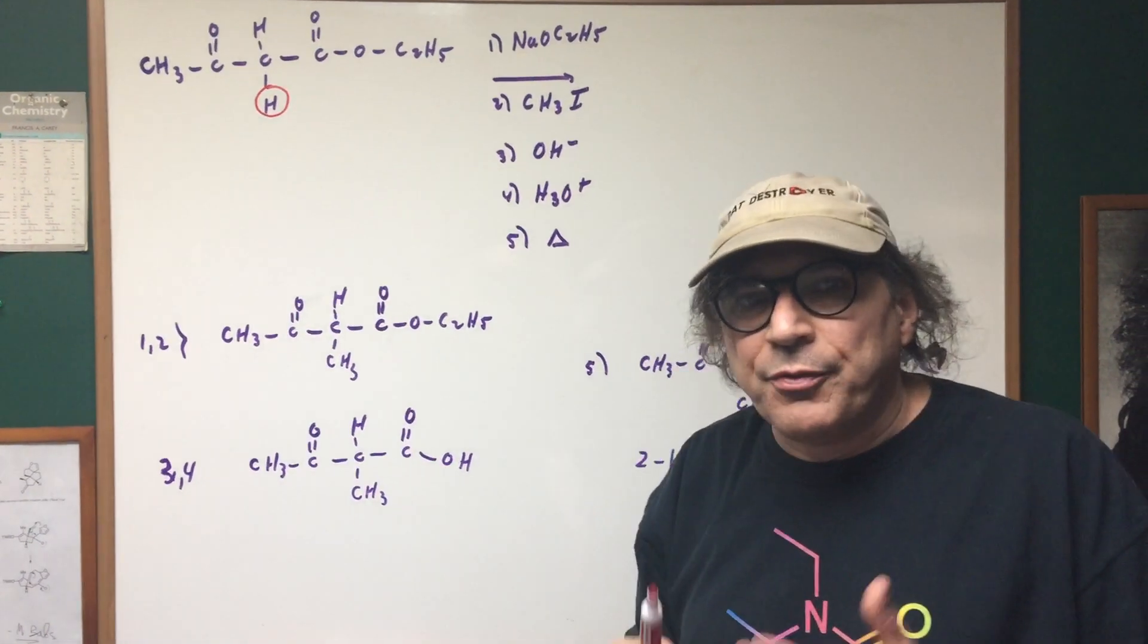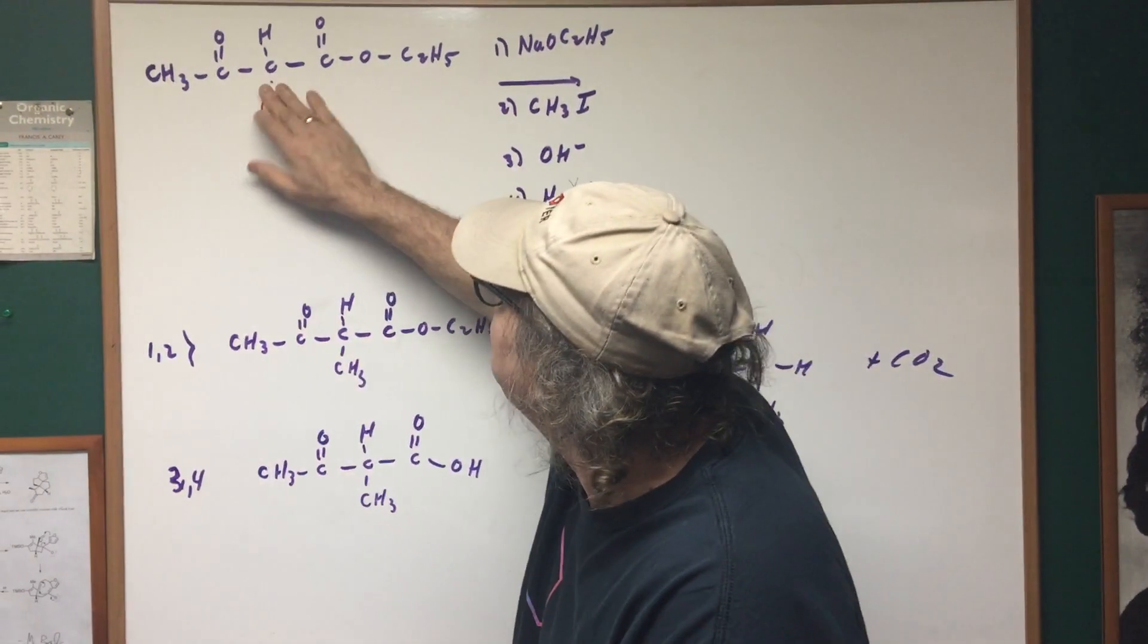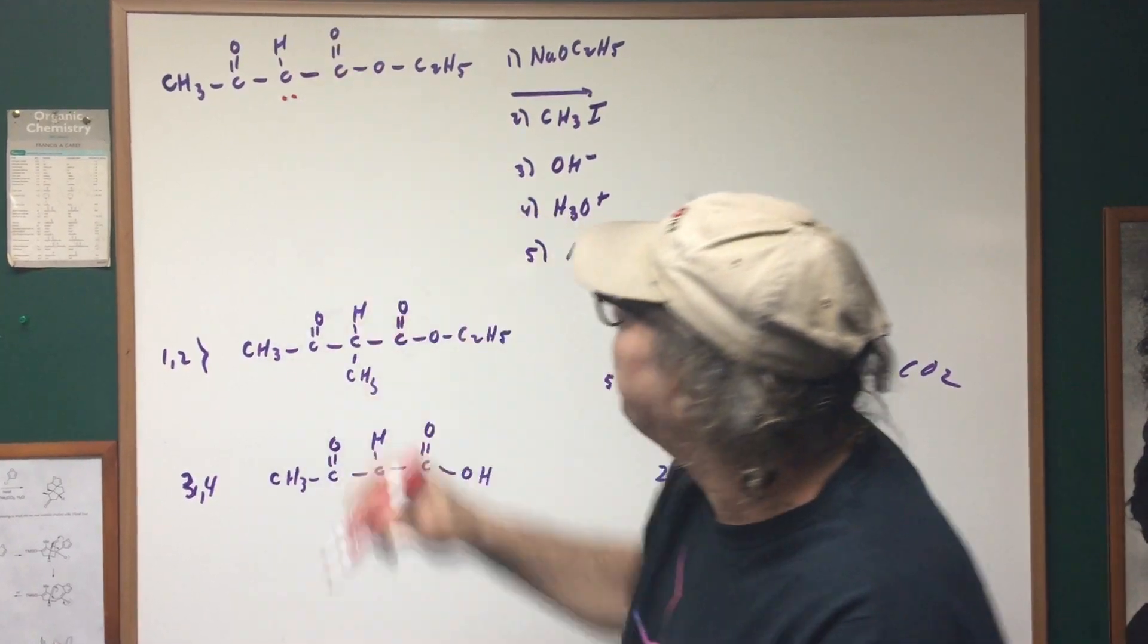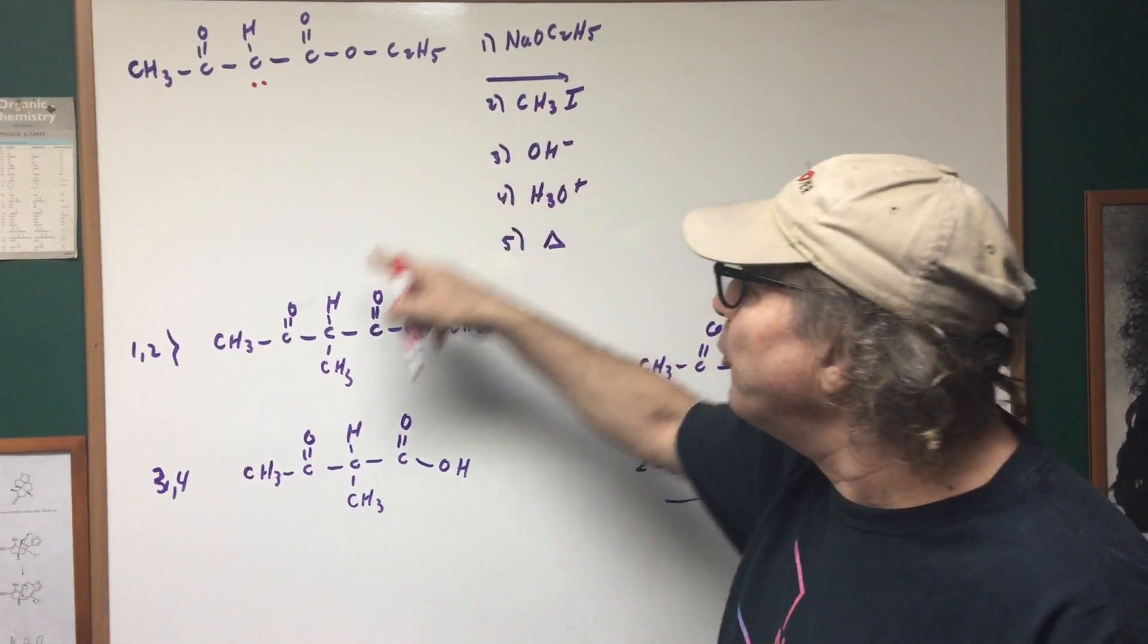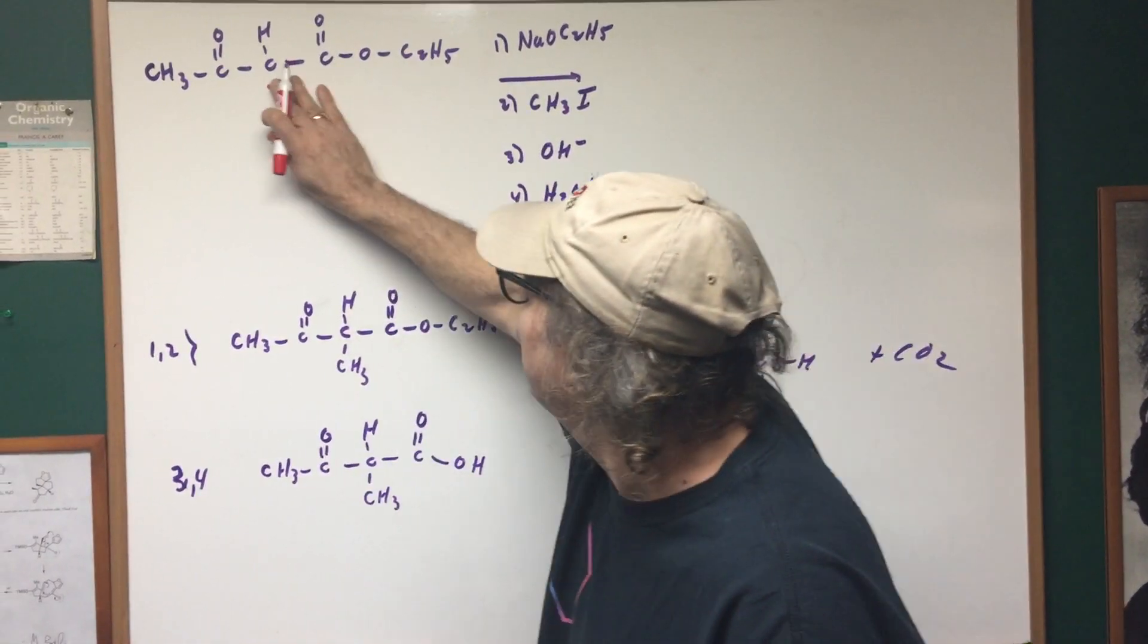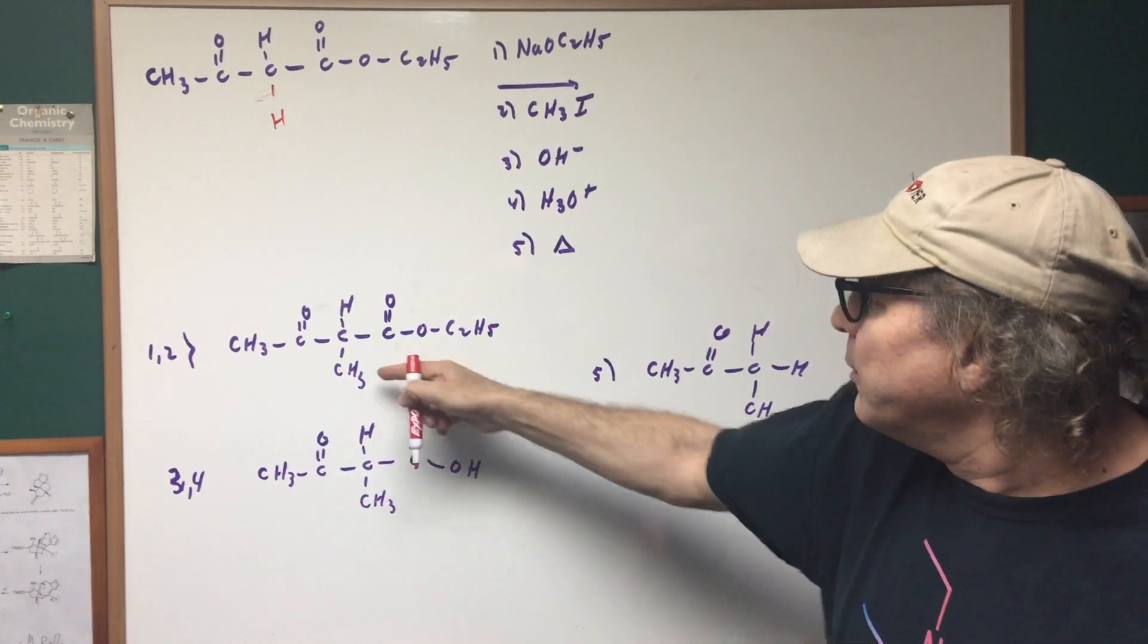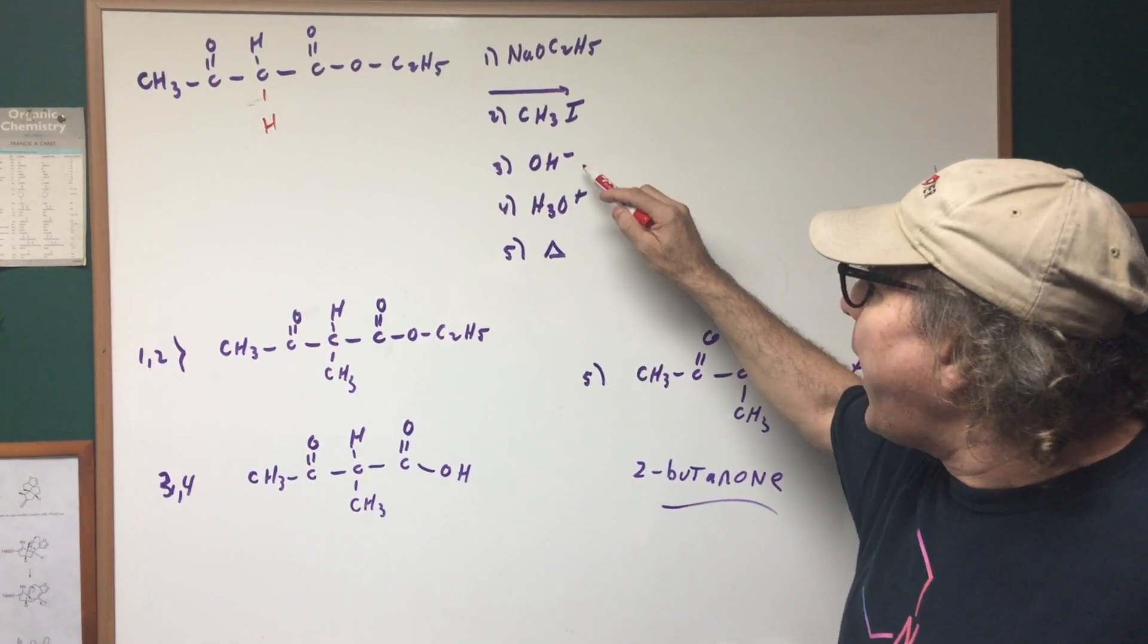That's gonna remove off the most acidic proton, and when you remove off the most acidic proton, I hope you can see that would give me this. And then this would simply capture the methyl group, and as you can see, we would simply alkylate the molecule and get product number two.